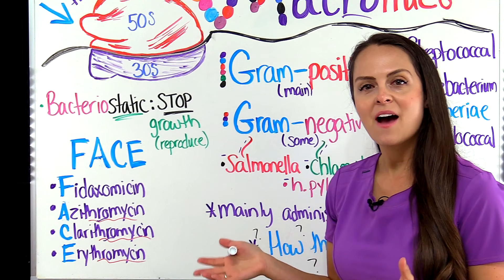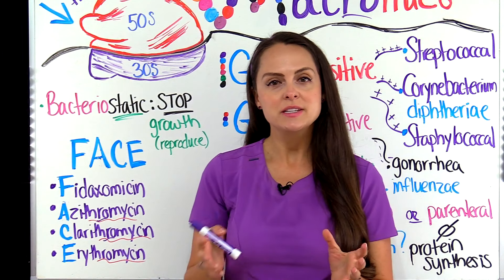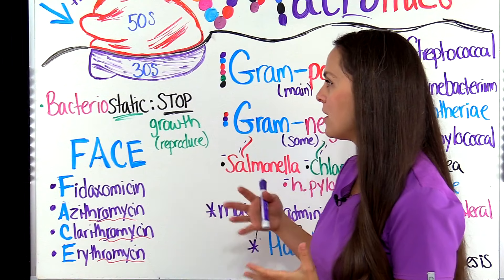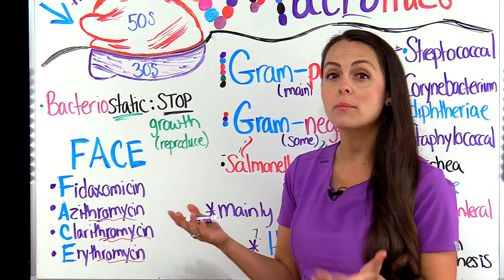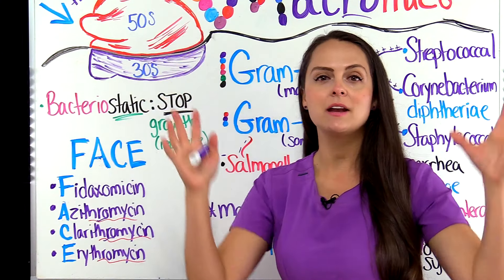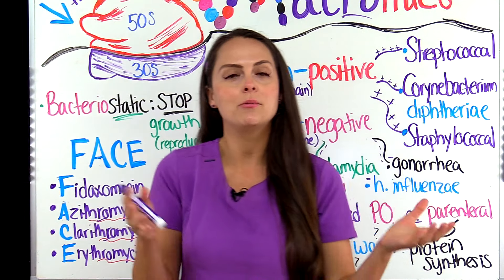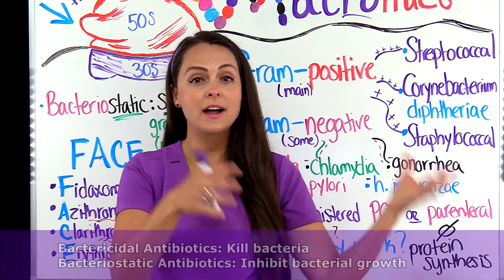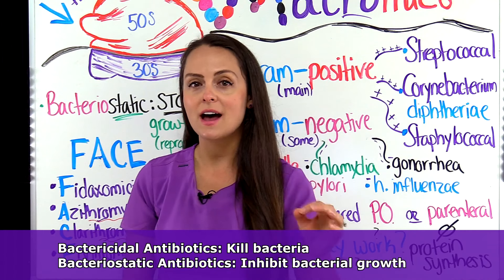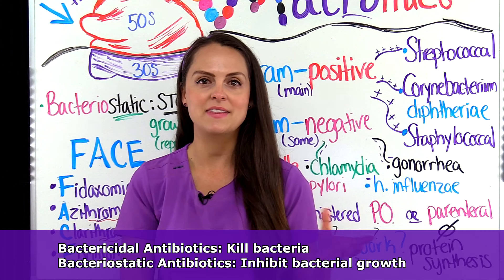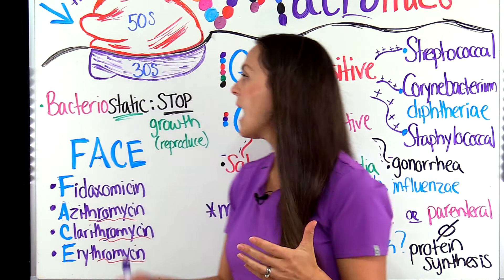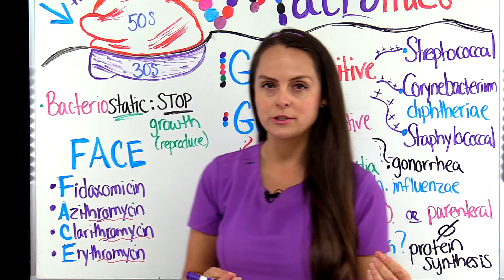Now let's talk about how macrolides work. These medications generally have a bacteriostatic effect on the bacteria, meaning that they stop the growth and reproduction of the bacteria. Depending on the antibiotic group, it'll work differently — for instance, aminoglycosides that we talked about in our previous lecture have a bactericidal effect, meaning that they kill the bacteria. But generally speaking, macrolides affect how bacteria are able to grow and reproduce.